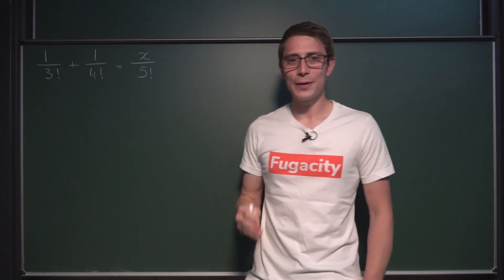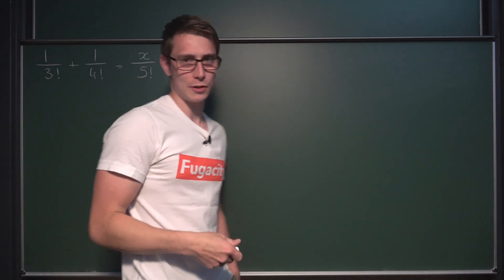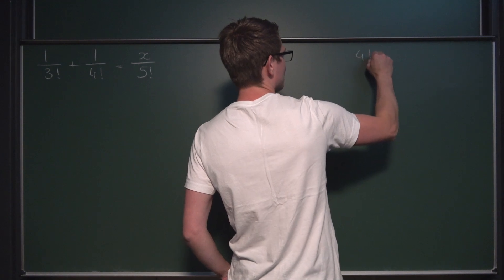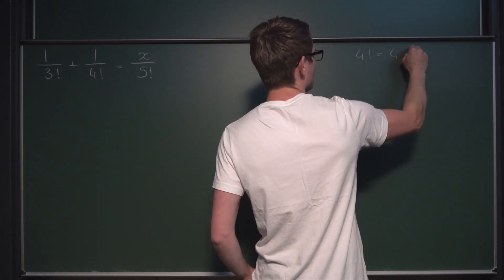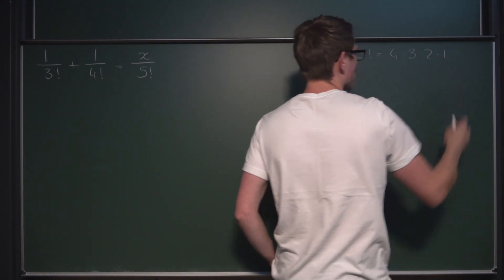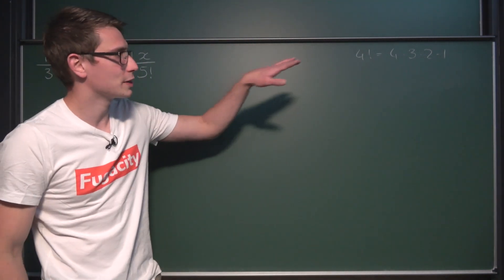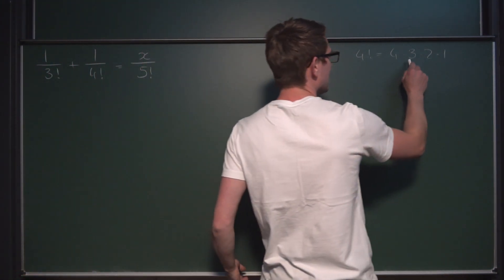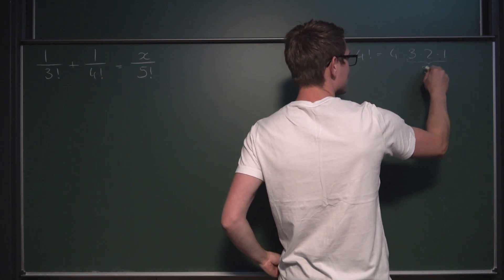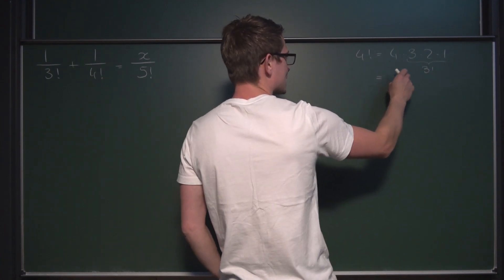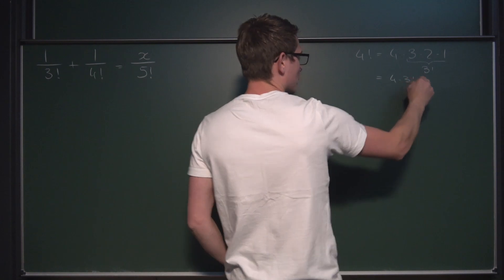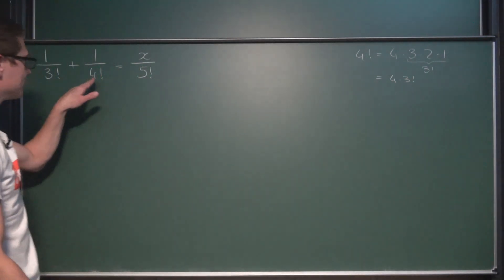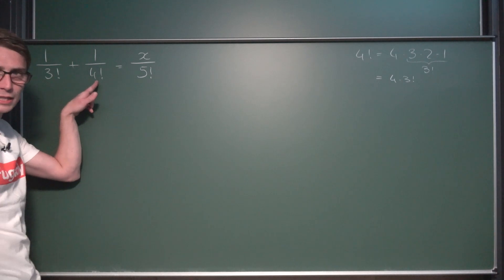The cool thing about factorials is that they are defined recursively. If we have something like 4 factorial, that's the same as 4 times 3 times 2 times 1. And since the factorial is recursively defined, we have 3 factorial inside — so 4 factorial is the same as 4 times 3 factorial. We can actually recover the 3 factorial in the expression we have here.